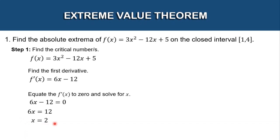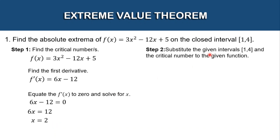For step number 2, we need to substitute the given intervals 1 to 4 and the critical number into the given function. So we will have three coordinates: x = 1, x = 4, and x = 2. Let's substitute them one by one into the given function. Starting with x = 1.